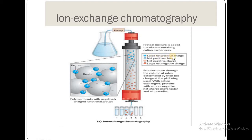The blue color represents proteins with large net positive charge, the light blue color represents net positive charge, the yellow color represents net negative charge, and the red color represents large net negative charge. Proteins move through the column at a rate determined by their net charge at the pH being used. With cation exchangers, proteins with a more negative net charge move faster and elute earlier.